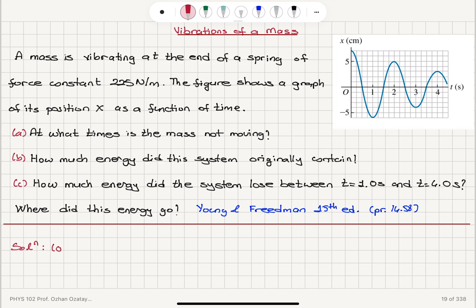So when is the mass not moving? That means we should have an instantaneous speed equal to 0. So dx/dt, which is the speed, should be equal to 0. That means we have extremum points in the x-t graph. So where are these extremum points? Let's take a look.